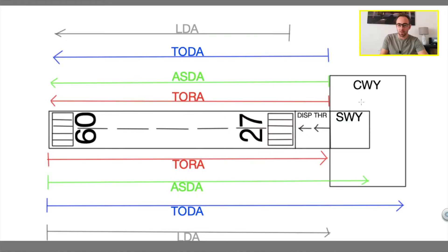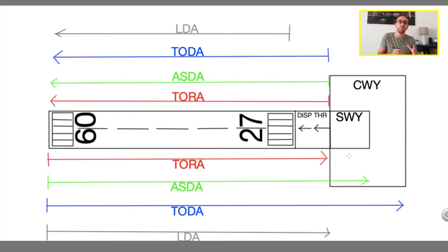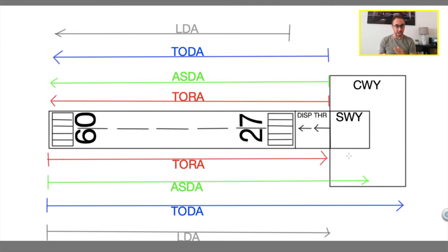If you look at the whiteboard here, I depicted the clearway here. This area in here — this is a clearway. The clearway is basically an area clear of obstacles that is unprepared, so the clearway could be even over water. The important thing is not what you find on the surface of the clearway, but that there are no obstacles, because the clearway is used to help the aircraft start the initial climb.